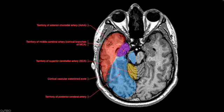Further inferior still, we have the temporal lobe, which is largely supplied by the middle cerebral artery. And again, the posterior cerebral artery supplying the occipital lobe and posterior temporal lobe. And then the anterior choroidal artery, which is a branch off of the supraclinoid internal carotid artery directly, which supplies this medial portion of the temporal lobe. And you can start to see that there are vascular territories supplied by some of the cerebellar branches off the vertebrobasilar system.